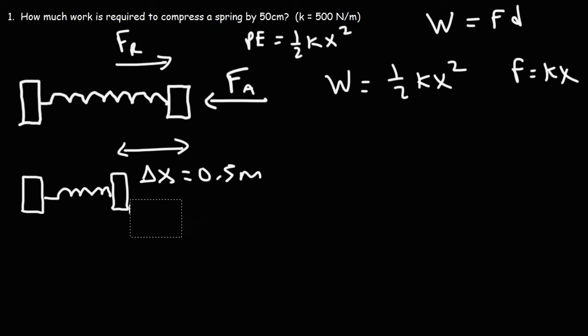But now let's go ahead and finish this problem. So we have one half times k, k is 500 newtons per meter, and then x squared. So x is 0.5 meters, and we're going to square it.